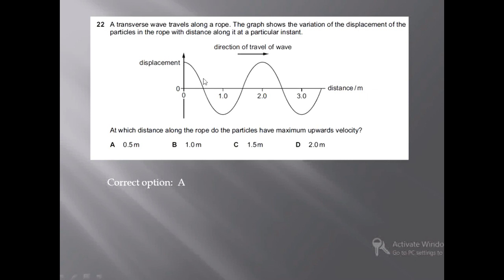To determine the maximum velocity, we find the gradient of the displacement-time graph. The gradient of the displacement-time graph gives us the value of velocity. So where the gradient is going to be maximum, the velocity is going to be maximum.